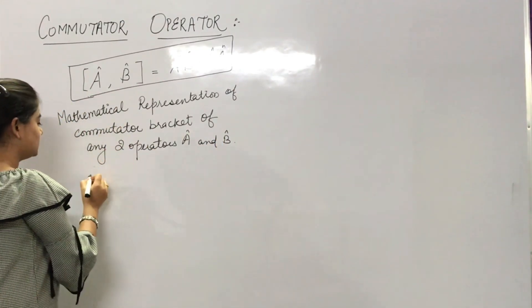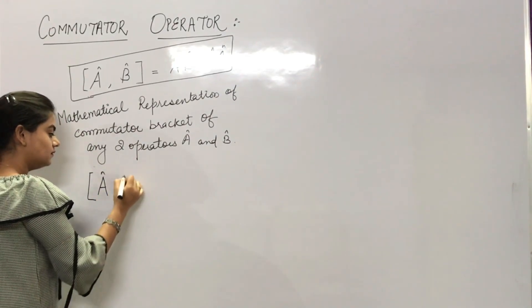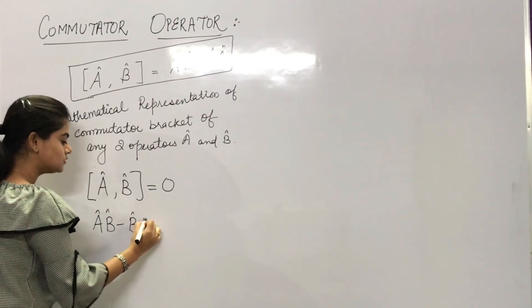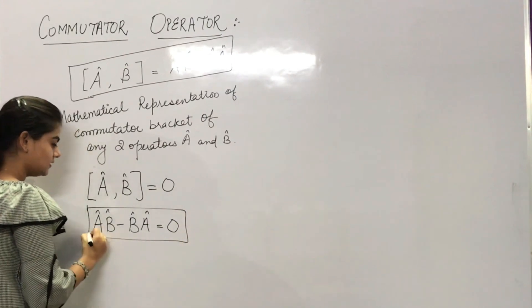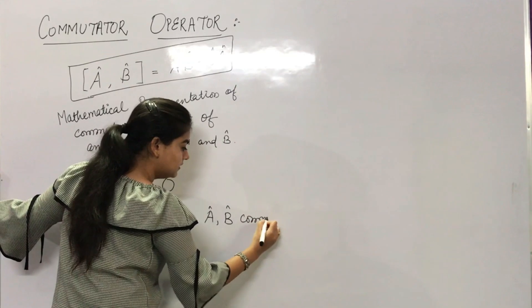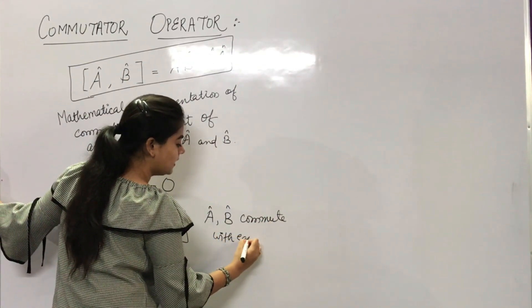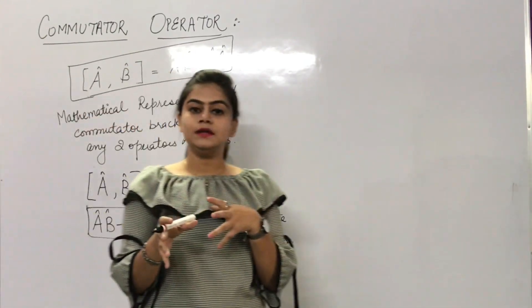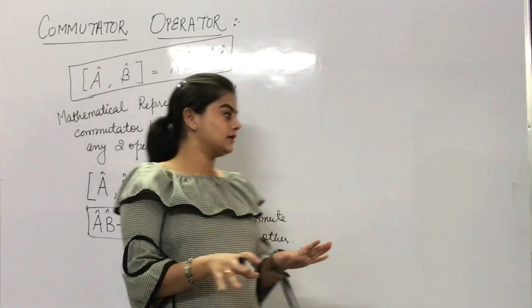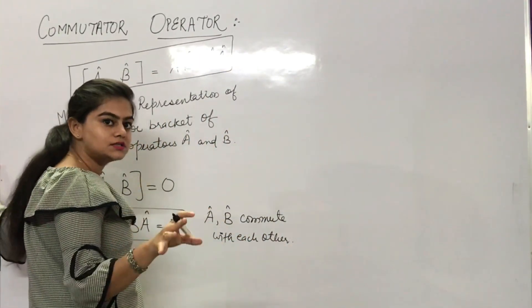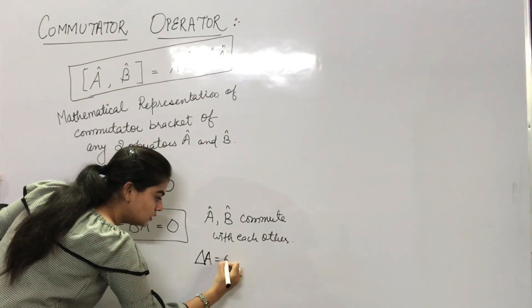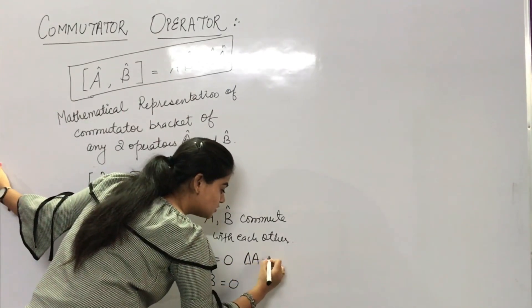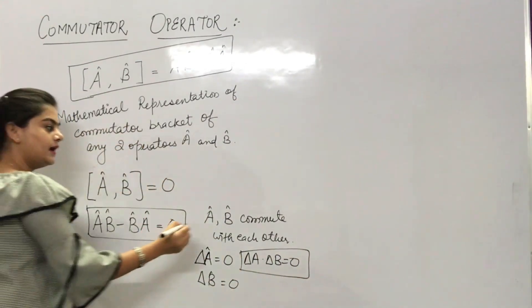Now, if A and B commute with each other, the commutator bracket of A and B will be equal to zero. This means operator A and operator B commute with each other. Commute करने का मतलब है कि दोनों quantities A and B, both observables, can be calculated accurately at the same time without any error. The uncertainty in the measurement of A cap is zero and uncertainty in the measurement of B cap is also zero, which means the product of uncertainty of both is also zero — in the case when both are commuting.